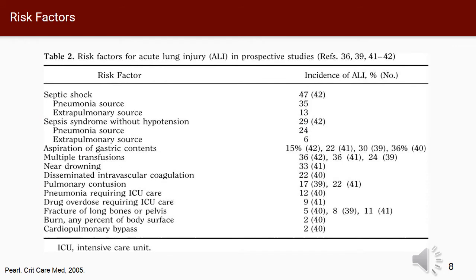The table seen here lists the risk for acute lung injury in general. The highest ALI risks are sepsis, aspiration of gastric contents, and multiple transfusion. Less than 50% of patients with risk factors develop ALI. In patients who have other risk factors for ALI, such as those listed in this table, possible TRALI may be used to address these cases.